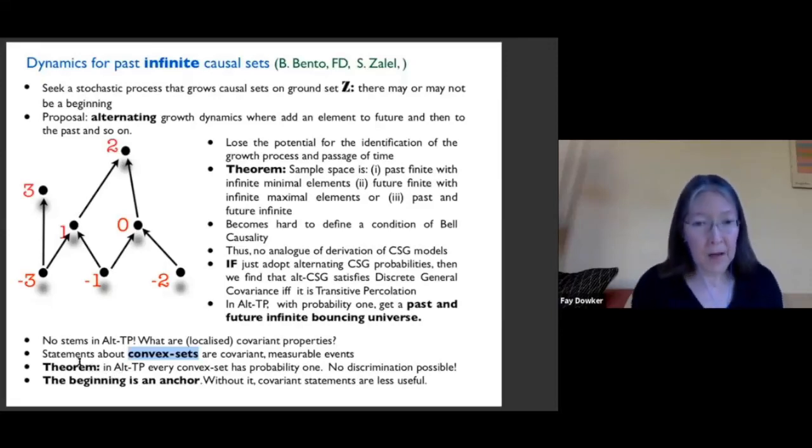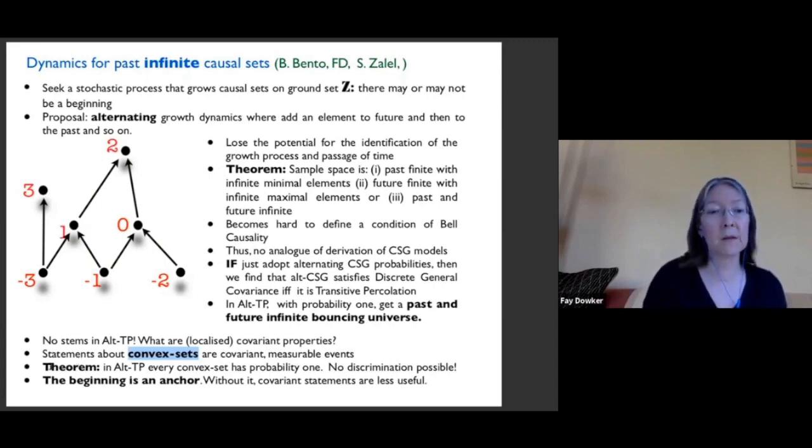Now, that seems very nice and plausible and makes physical sense, except that we have a theorem which is that in alternating transitor percolation, every convex set has probability one. That means that if you ask in alternating transitor percolation, will I get a diamond, a four element diamond as a convex set? The answer is yes.